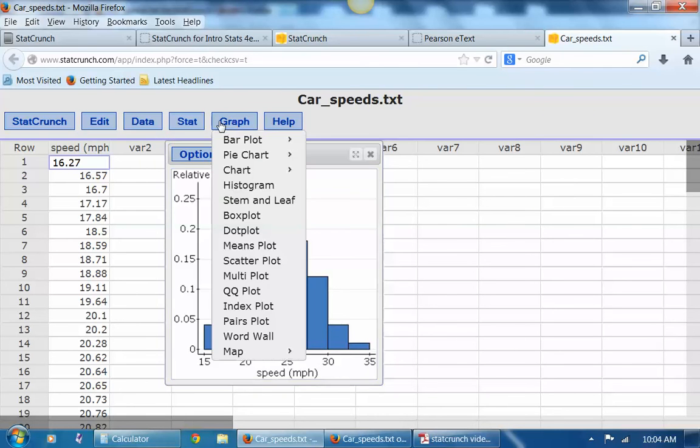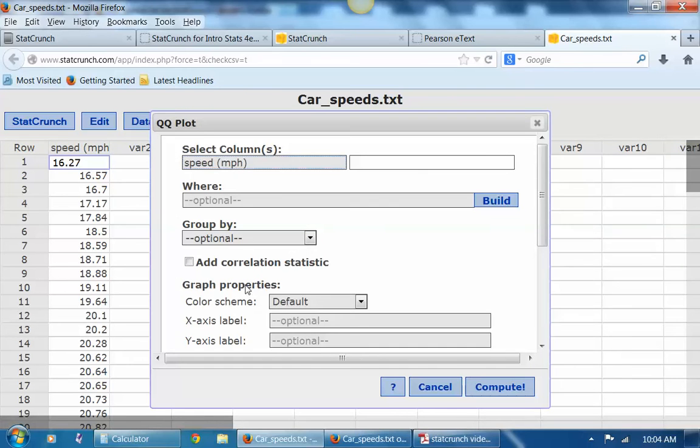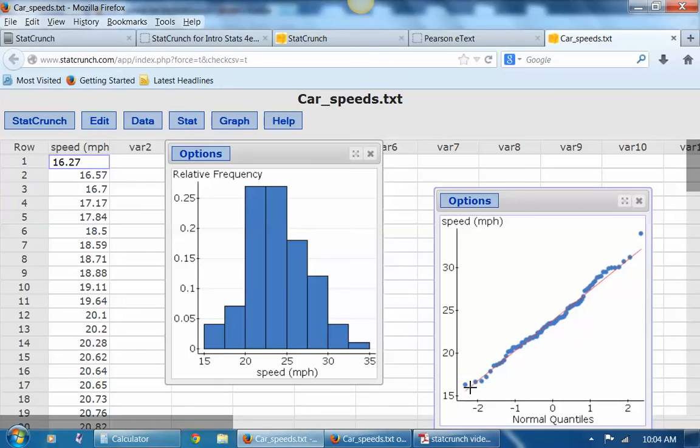Okay, now let's go ahead and do a normal probability plot, which is called a QQ plot here in StatCrunch. And I'm going to pick that same variable. And remember, if you remember the material in this chapter, when we do a normal probability plot, we're looking for the data as it's plotted here to follow a fairly straight line. We don't want to see any ups and downs. And that looks pretty good. Okay, so let's go back to the e-book.